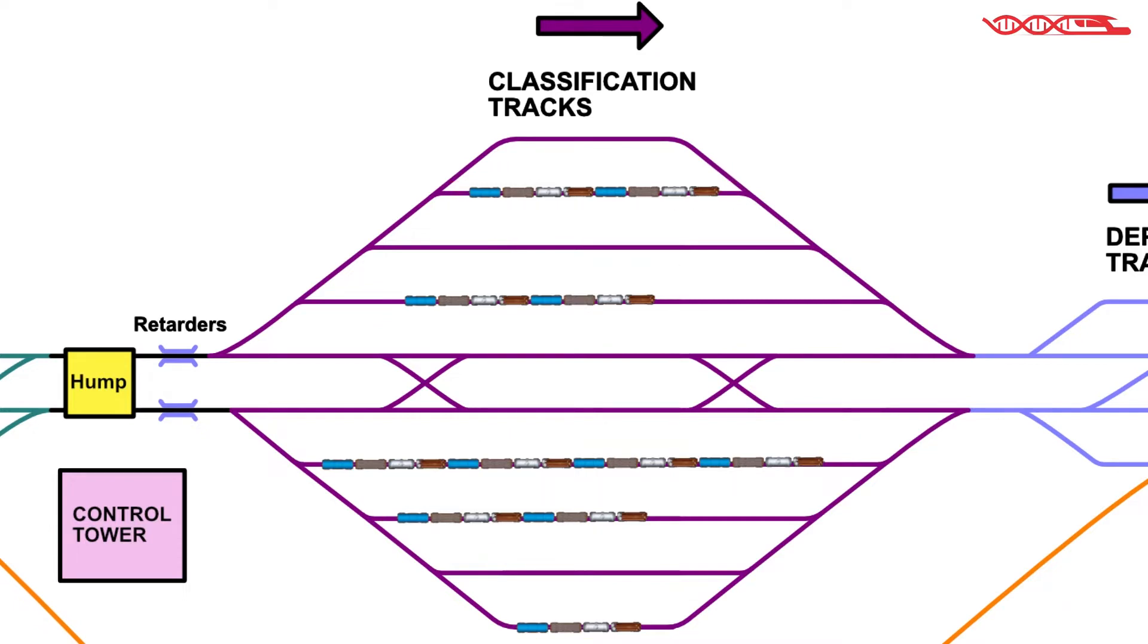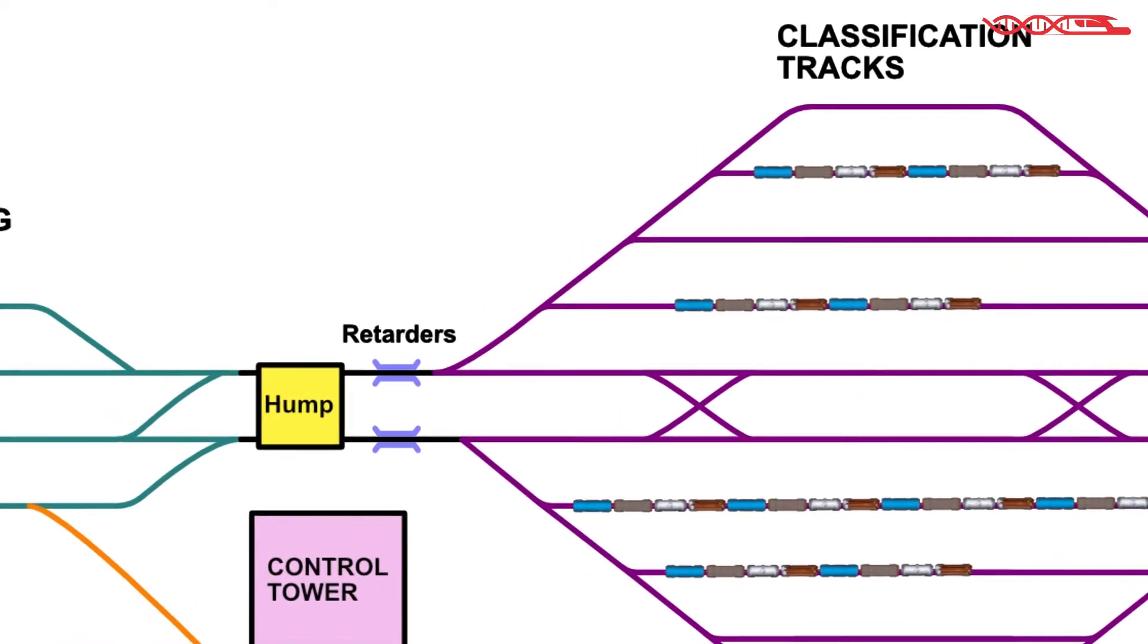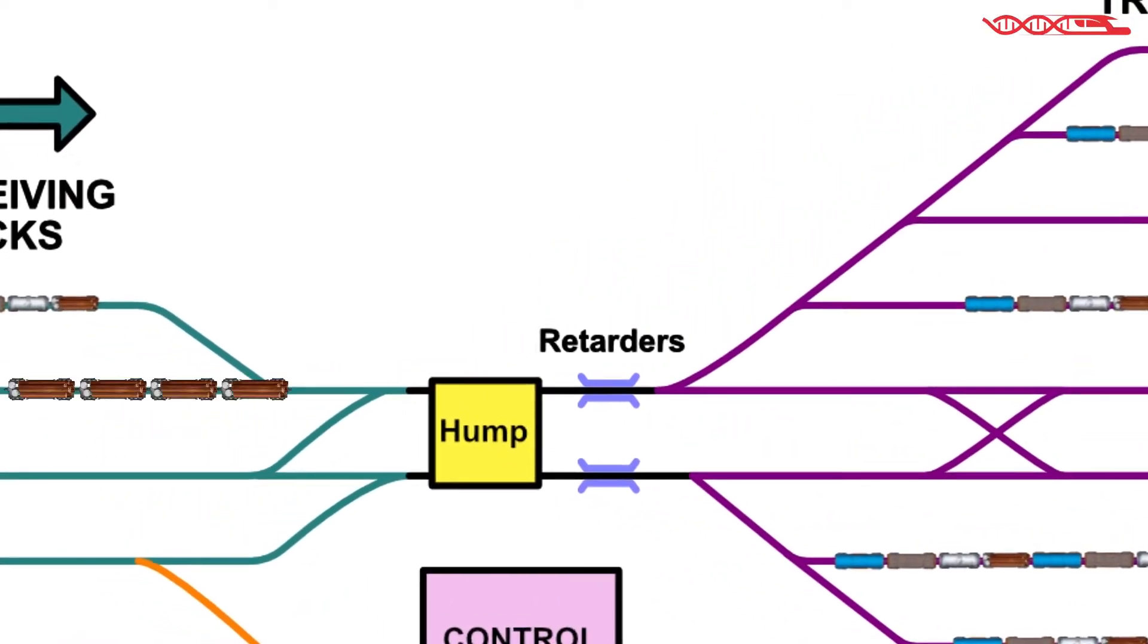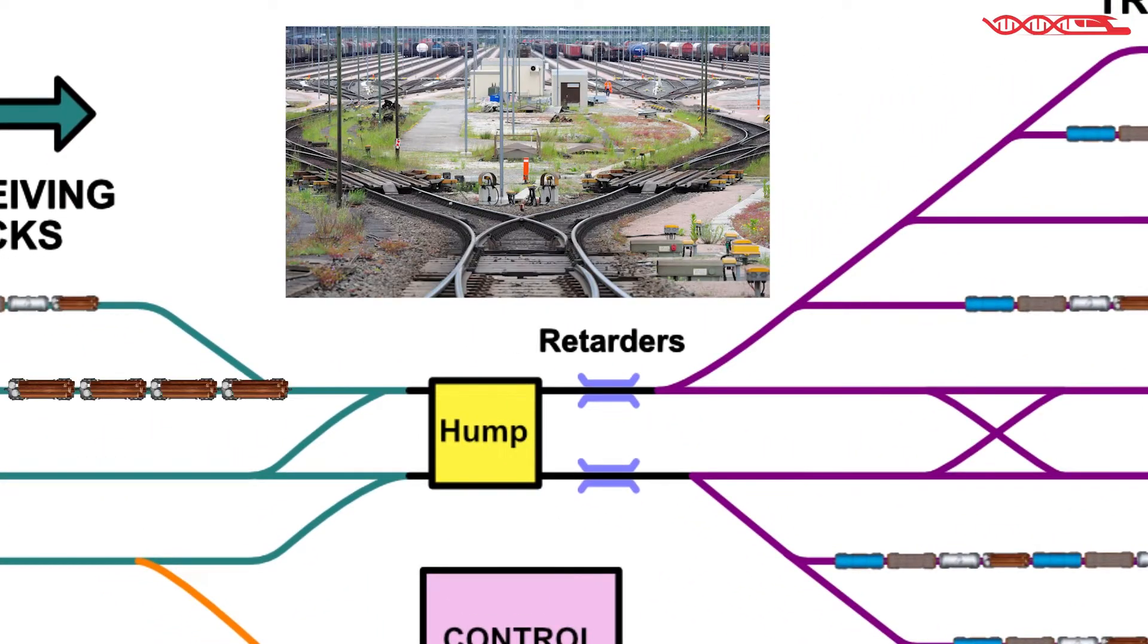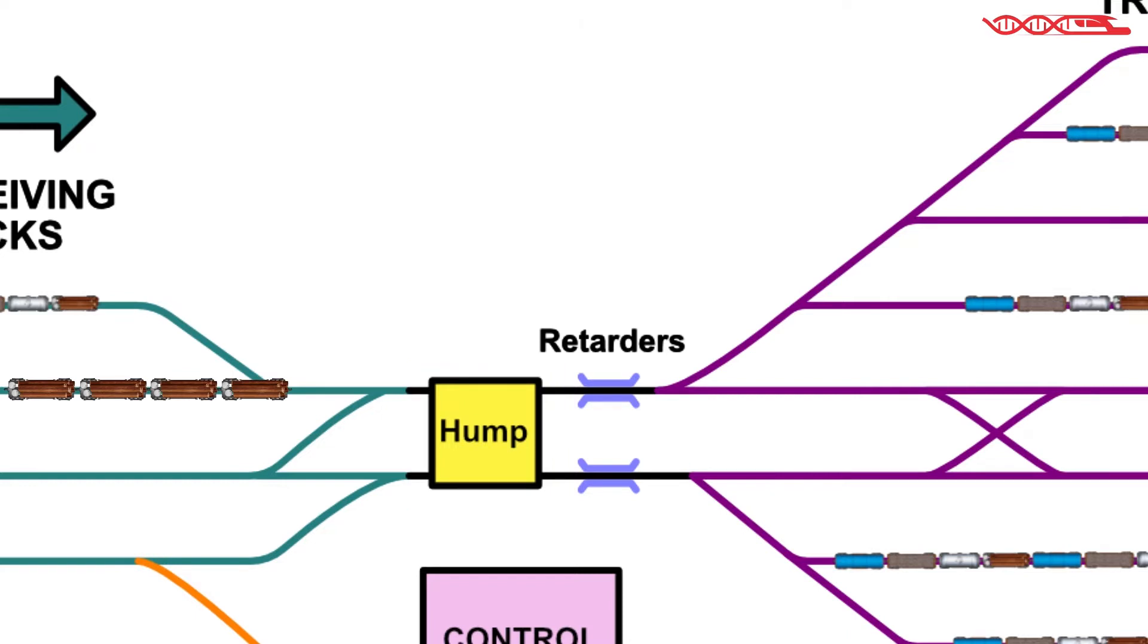But before they arrive in this section, there is a hump in between receiving and classification tracks. On the yard, rail cars are usually moved by shunting engines or station locomotives. This limits usage of these engines and locomotives, so the response for this is making humps.